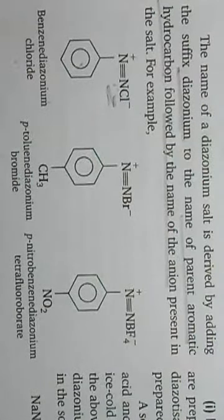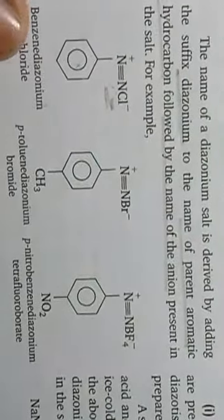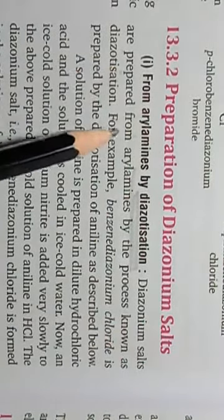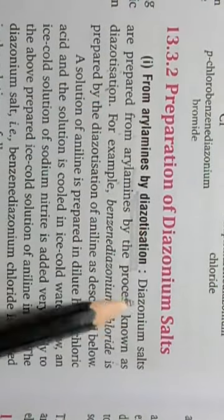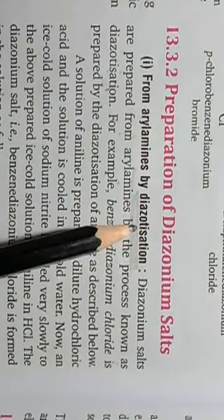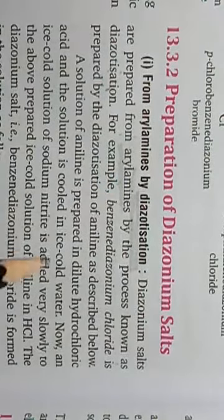The next topic is preparation of diazonium salts. Diazonium salts are prepared from aryl amines by a process known as diazotization. Diazotization is the process in which a diazonium salt is prepared from an aryl amine such as aniline.